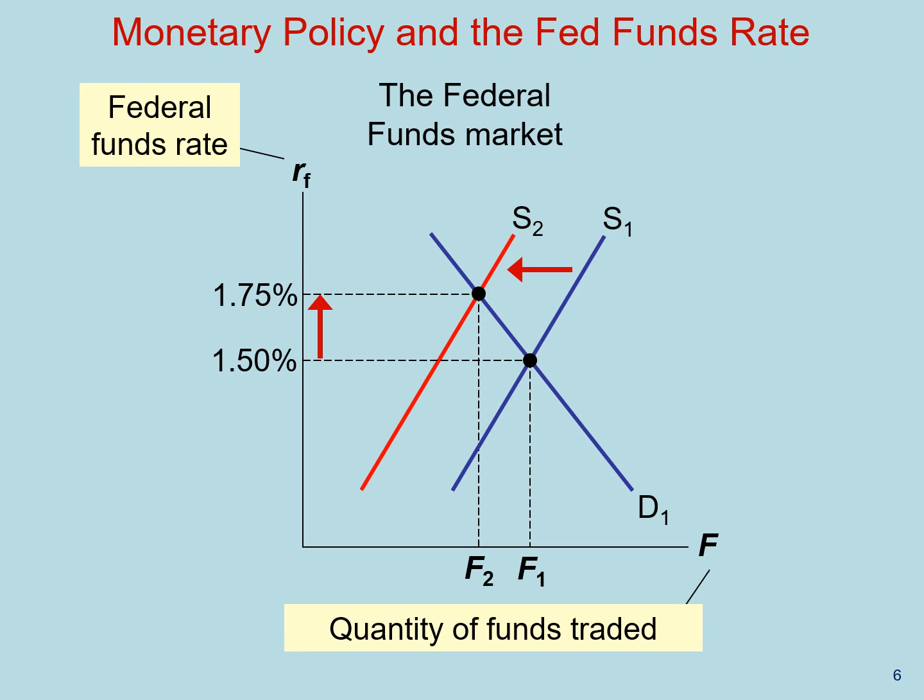Let's think about the effect of monetary policy in the federal funds market. On the y-axis, you have the quantity of funds traded, while on the x-axis you have the federal funds rate. In this demand and supply diagram, the demand for federal funds comes from banks that find themselves with insufficient reserves, perhaps because they made too many loans or had higher than expected withdrawals. The supply of federal funds comes from banks that find themselves with more reserves than they want, perhaps because they had lower than expected withdrawals or because few customers took out loans. As in any demand and supply diagram, the equilibrium federal funds rate adjusts to balance the supply and demand for federal funds.